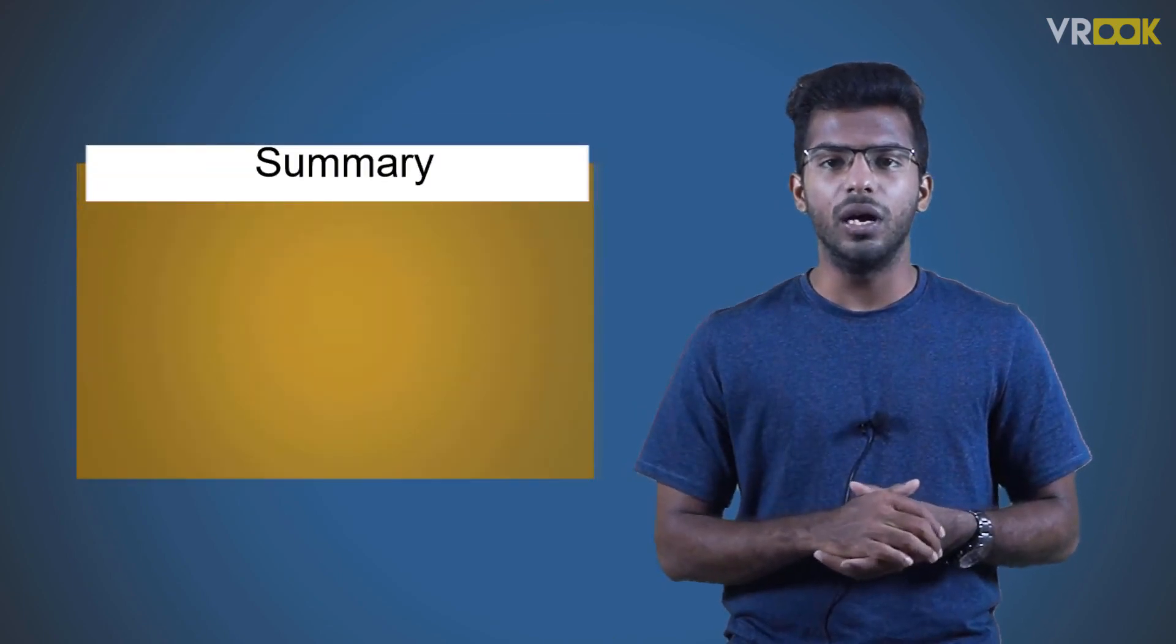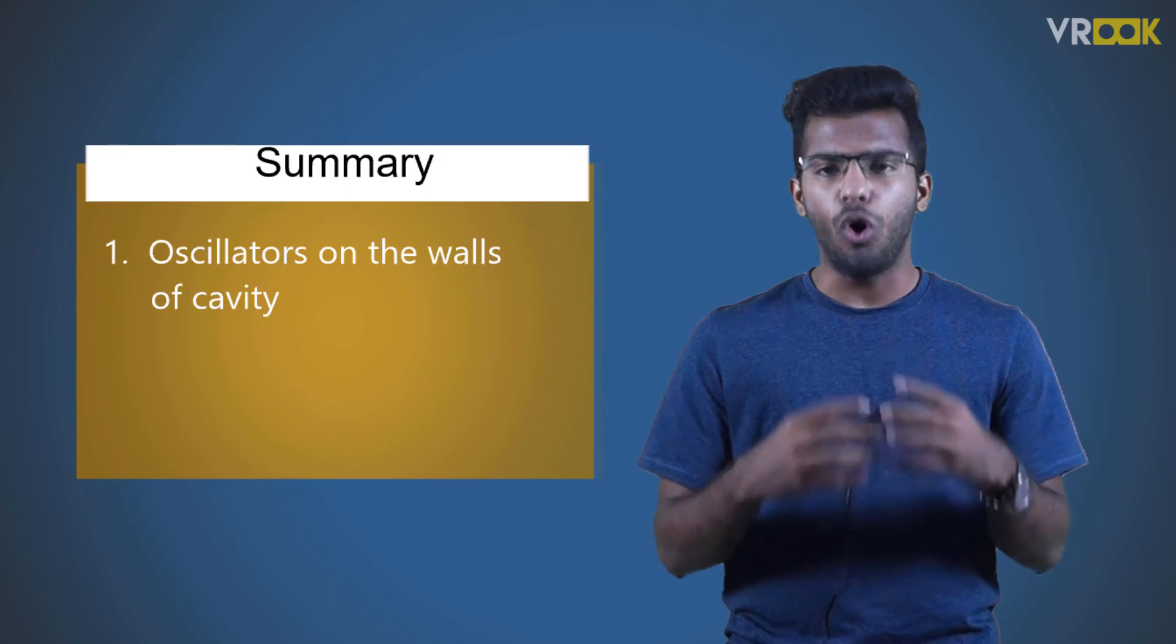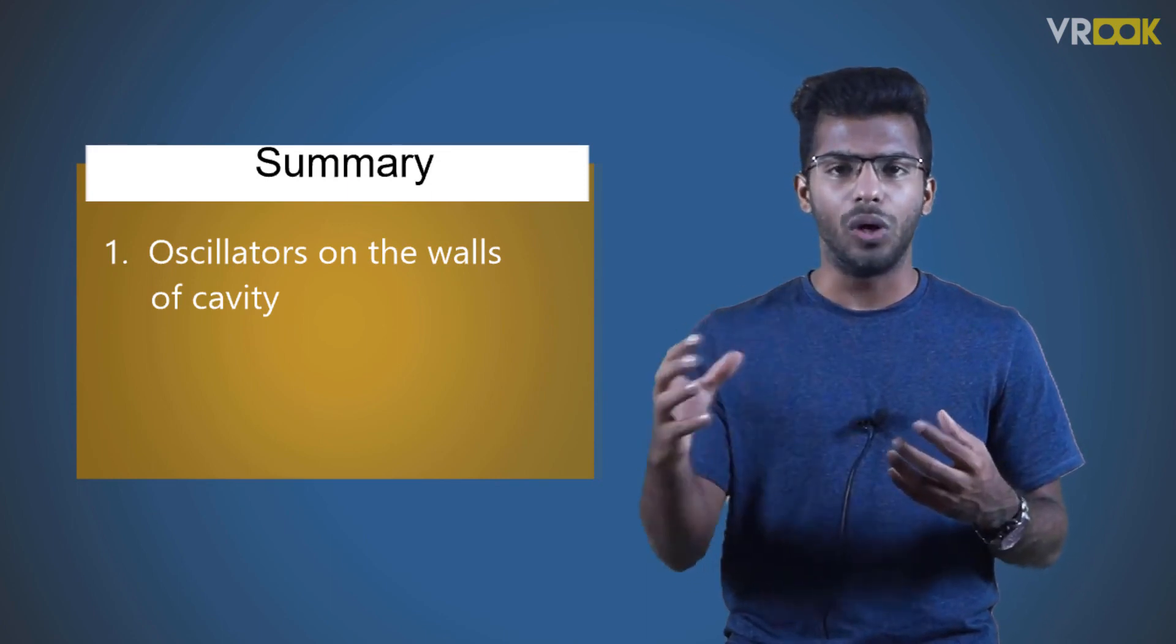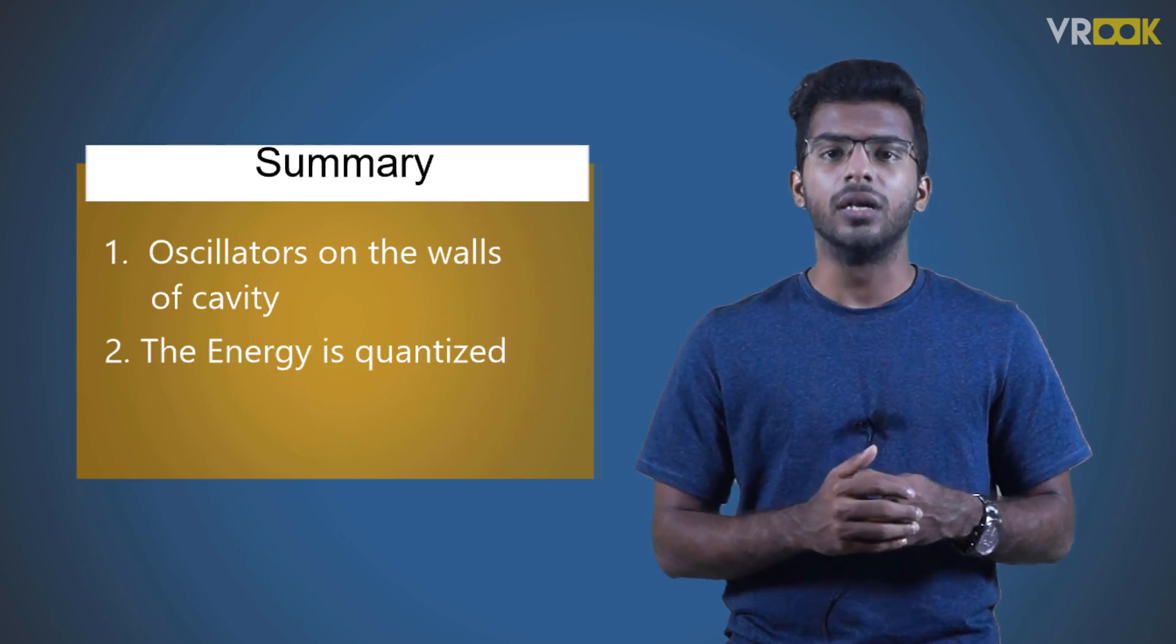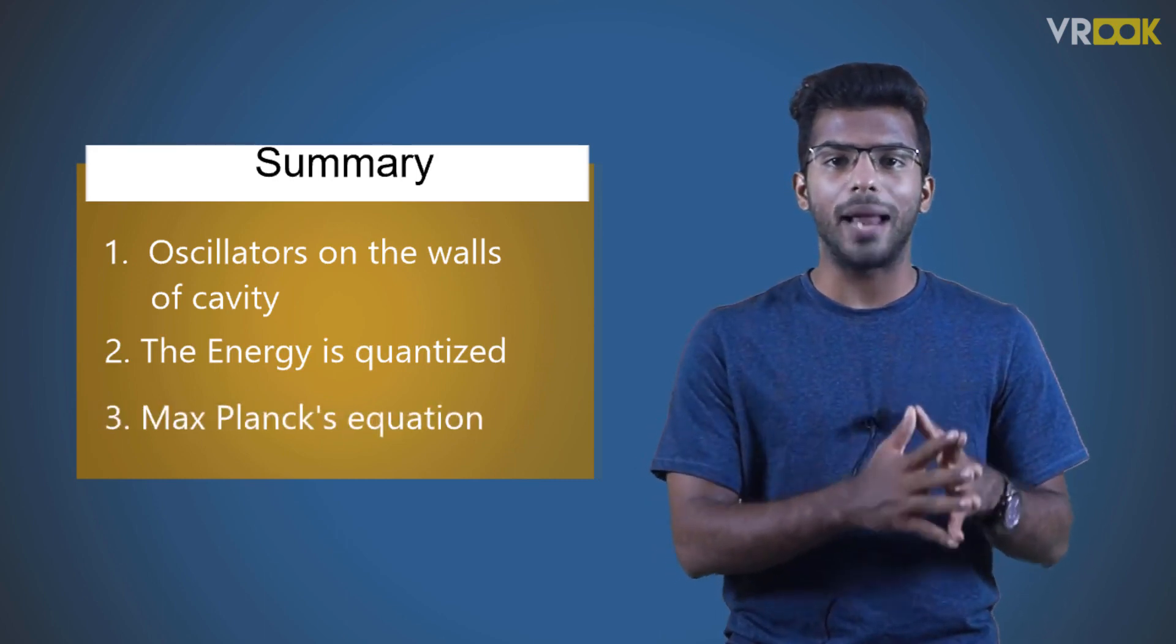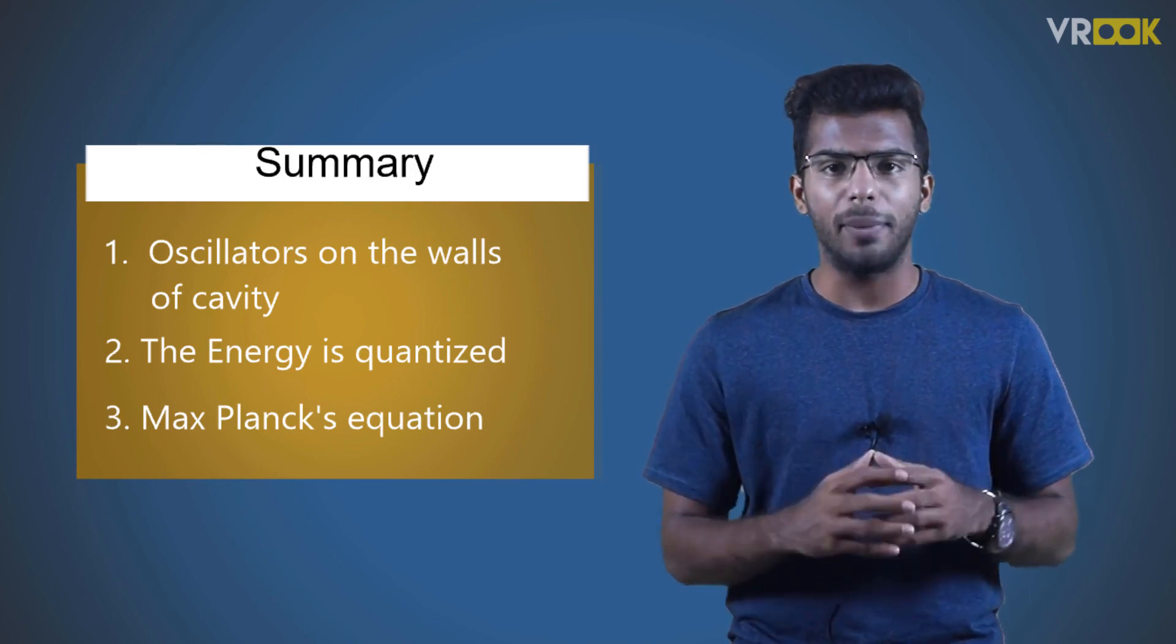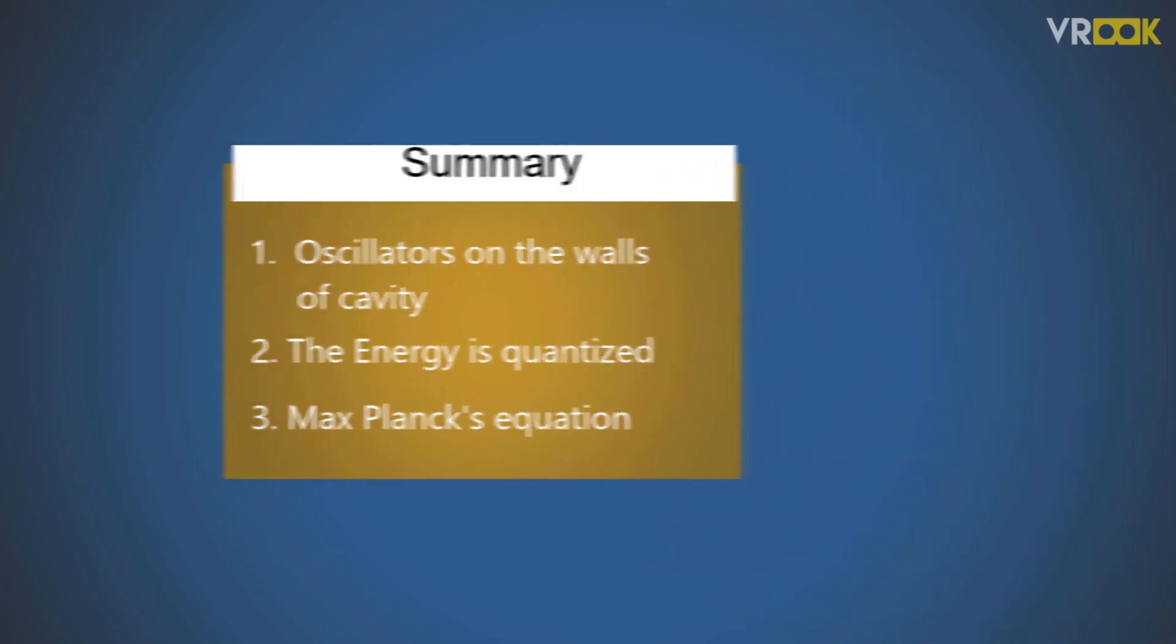To sum up, in this video, we learned energy is emitted by thermal oscillation of oscillators on the walls of cavity, the energy is quantized, and the Max Planck's equation which fits with experimental blackbody radiation curve. This is all about Max Planck's hypothesis. See you in the next video.